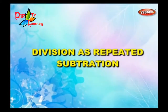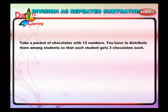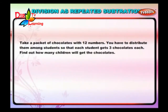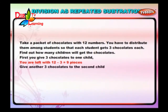Division as repeated subtraction. We know that division is repeated subtraction. Let us learn this through an example. Take a packet of 12 chocolates. You have to distribute them among students so that each student gets 3 chocolates each. First you give 3 chocolates to one child. You are left with 12 minus 3, which is equal to 9 pieces. Give another 3 chocolates to the second child. Now you are left with 9 minus 3, which is equal to 6.